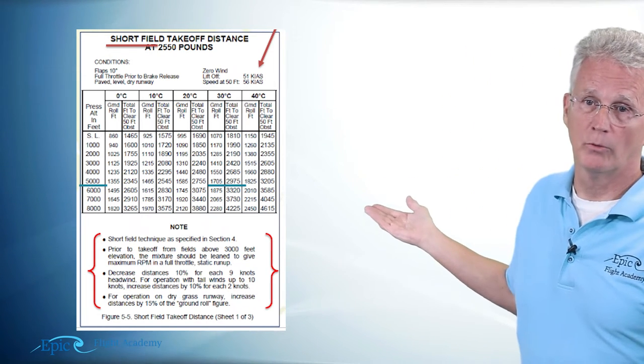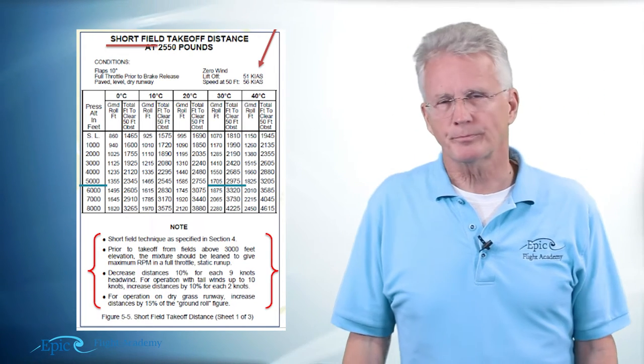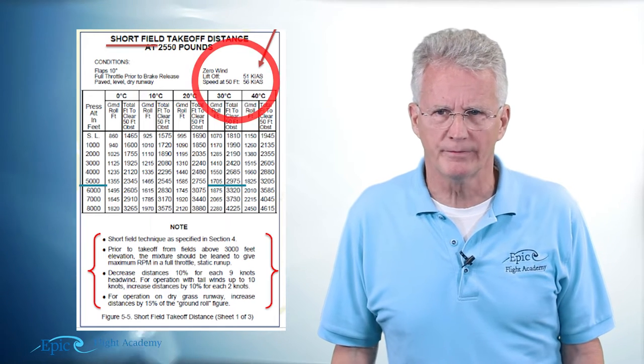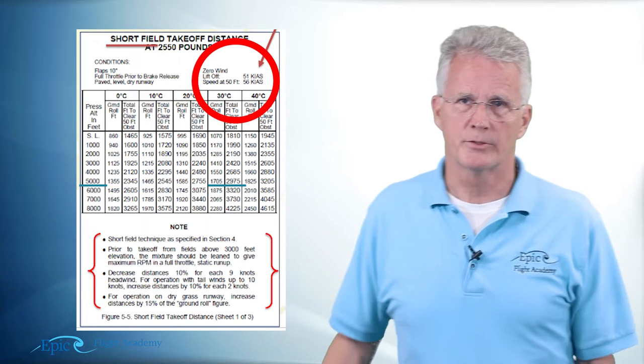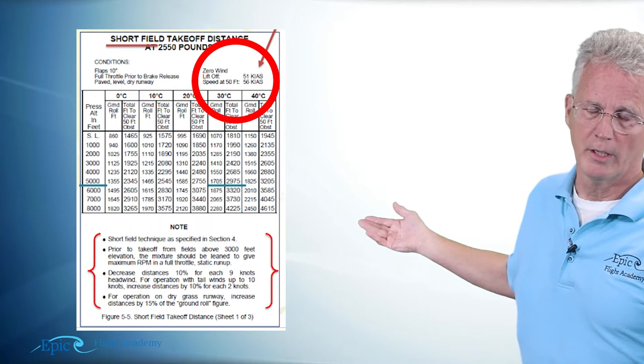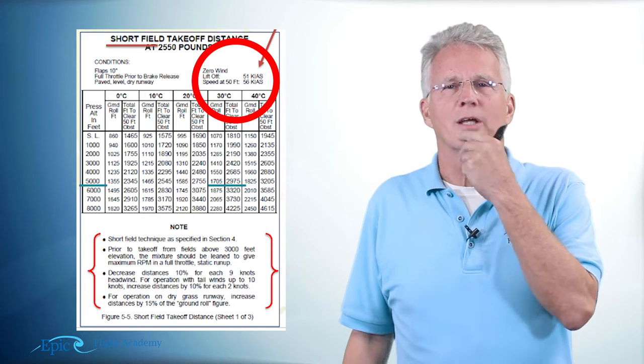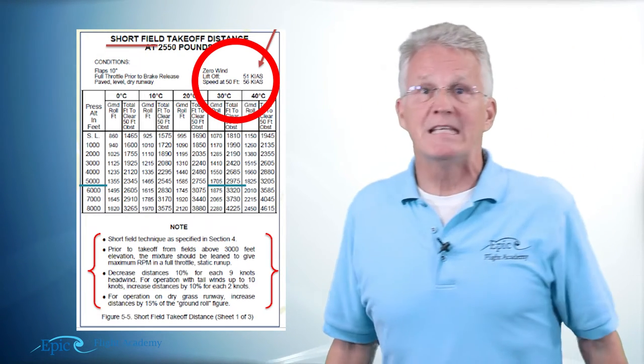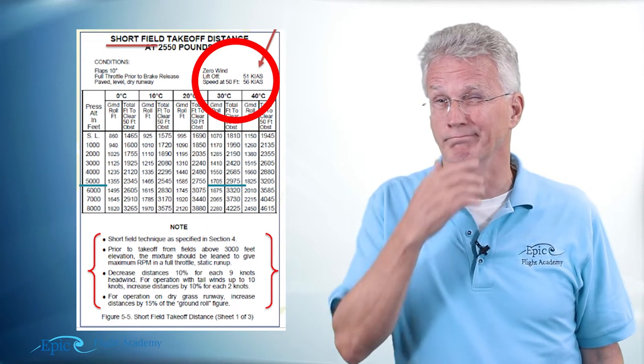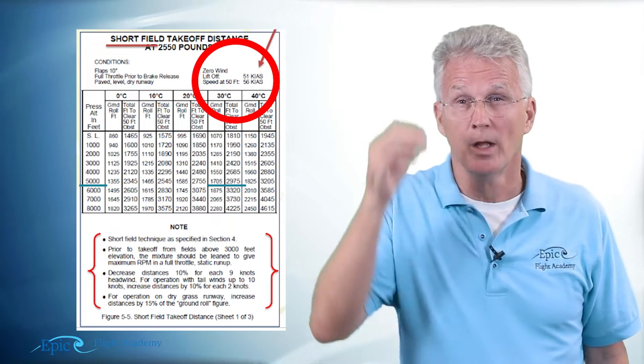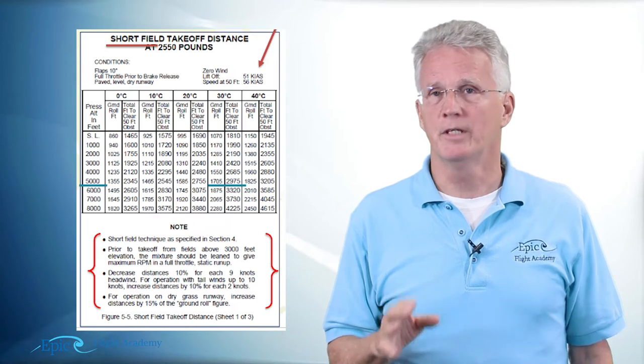There is a chart for 2400 pounds and 2200 pounds. We're just working with the chart at 2550. The next thing I want you to notice is the takeoff speeds. Notice there's a liftoff speed and a speed to clear a 50-foot obstacle. You see here at the end of the red arrow it says 51 and 56, and you're thinking now hold on a second, I thought my VX speed was 62. You're correct.